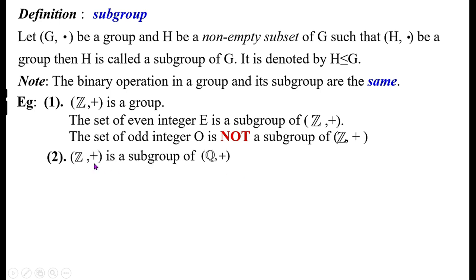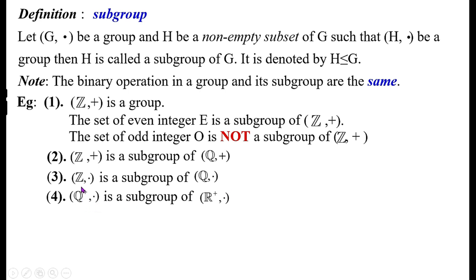Therefore the set of odd integers is not a subgroup. The set of integers with respect to ordinary addition is a subgroup of the set of rational numbers with respect to the same operation. The algebraic structure (Z, ·) is a subgroup of (Q, ·). Also, Q⁺ with multiplication is a subgroup of the set of positive real numbers R⁺ with multiplication, since Q⁺ is a subset of R⁺.